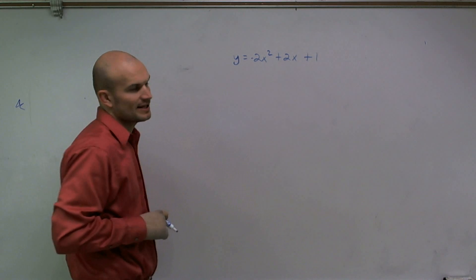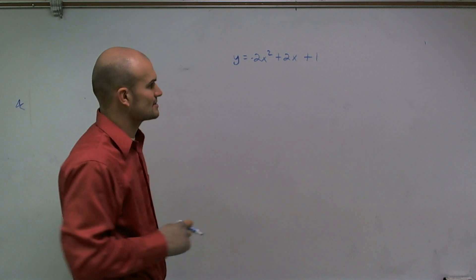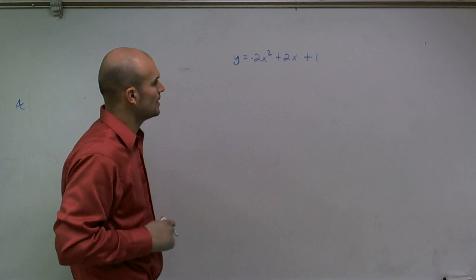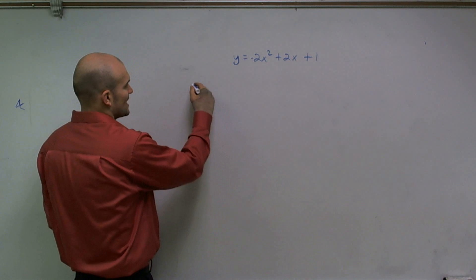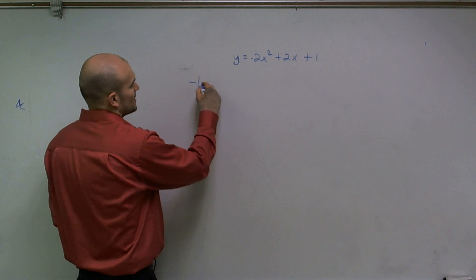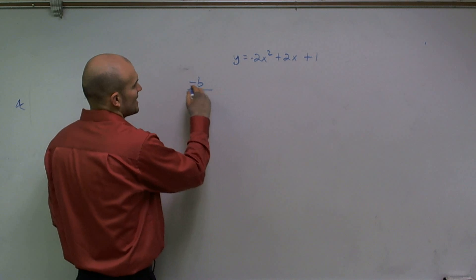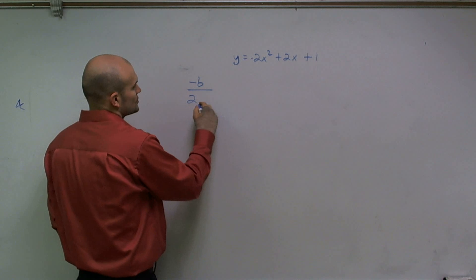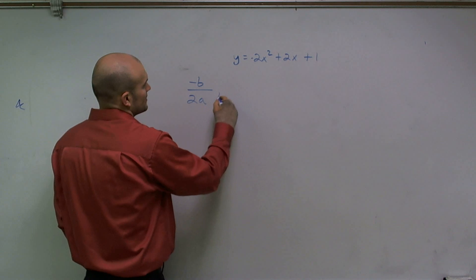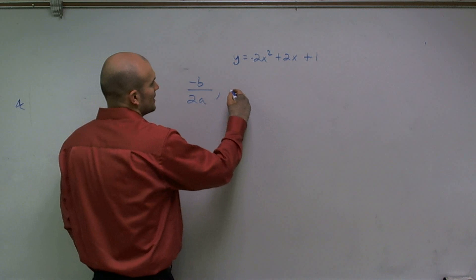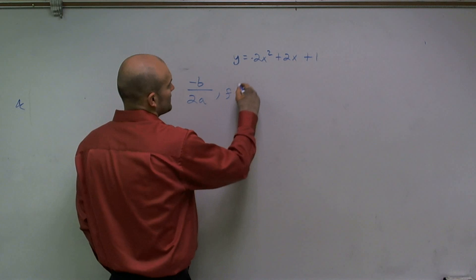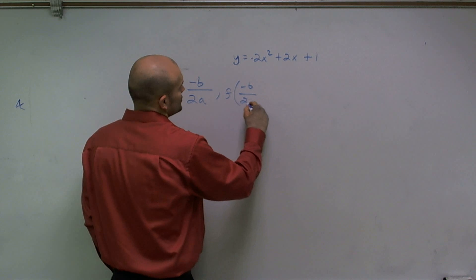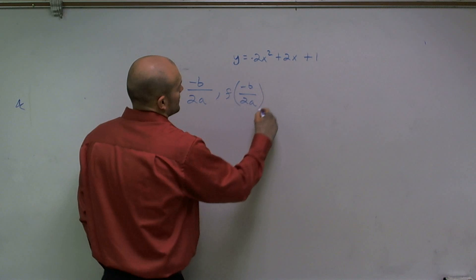To go ahead and find the vertex: the vertex of an equation can be written as opposite of b over 2 times a, comma f of opposite of b over 2 times a.